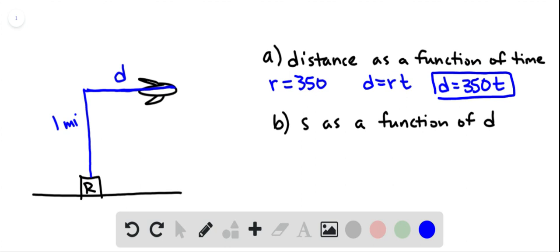Now we have the distance s, which is the distance from the radar station to the plane. That's like the hypotenuse of a right triangle, and we want to express s as a function of d.